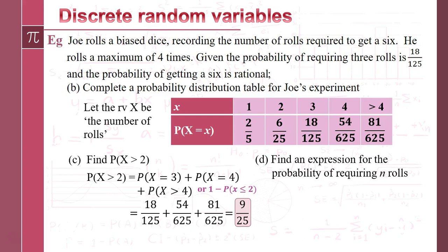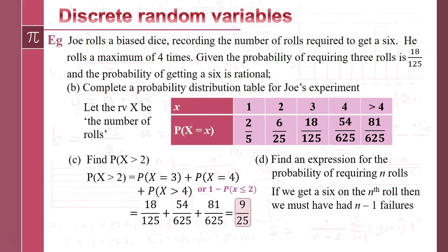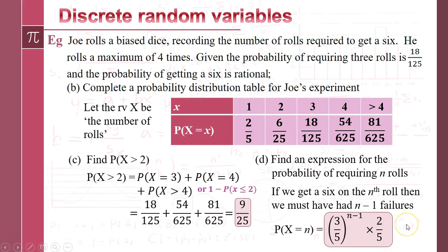Finally, an expression for the probability of requiring n rolls. This has a real structure to it: to get to the nth roll, we must have had n minus 1 failures beforehand. For 4 rolls, 3 failures; for 3 rolls, 2 failures. So the expression is (3/5)^(n−1) times 2/5. This structured setup is actually referred to as a geometric distribution — it's not technically examined as such in A-level maths anymore, but questions can still be structured around discrete random variables in this way.